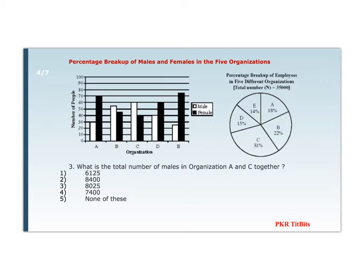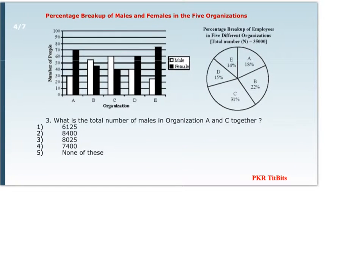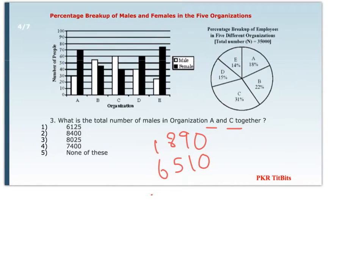Next question: what is the total number of males in organization A and C together? From the previous question, males in organization A = 1,890 and males in organization C = 6,510. Adding these: 1,890 + 6,510 = 8,400. So option 2 is the answer.